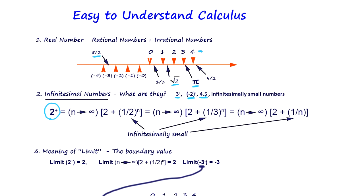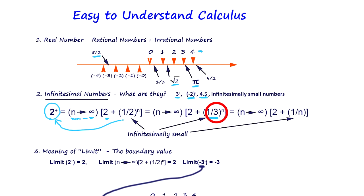This is called an infinitesimally small number. In math we write it this way: suppose n is an unspecified number going to infinity. Then 2 + (1/2)^n — when n gets large, it becomes one half, one quarter, one eighth, and so on, getting smaller and smaller. So it's going to be two plus something so small we cannot tell. We write it as 2+. We could do the same thing with a different sequence, like 2 + (1/3)^n, or 2 + 1/n.